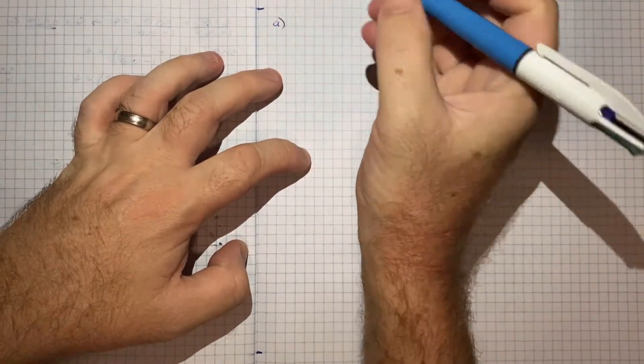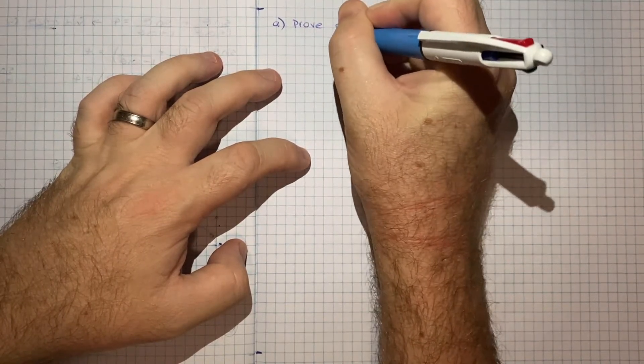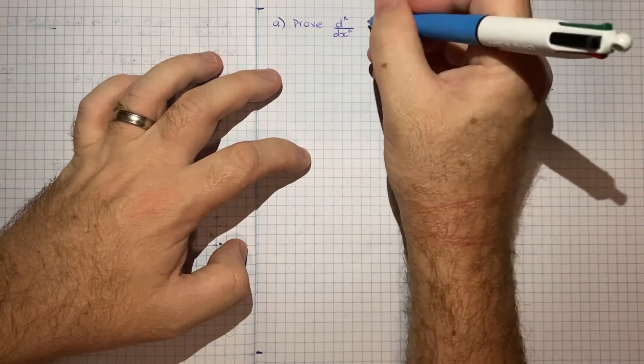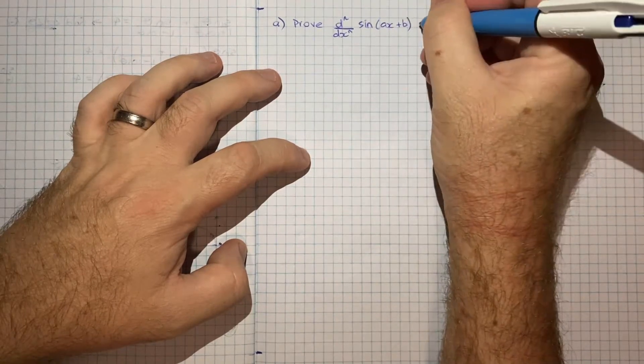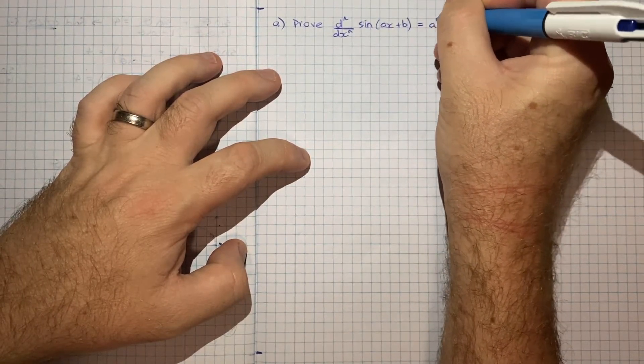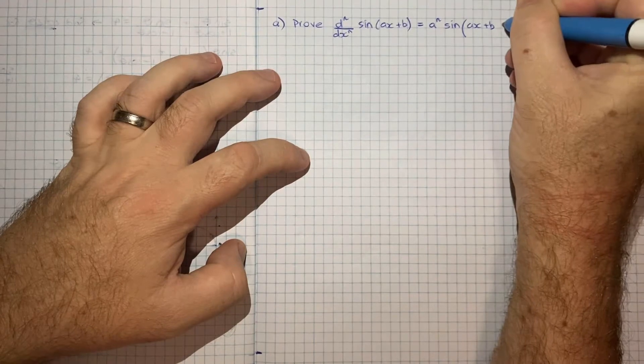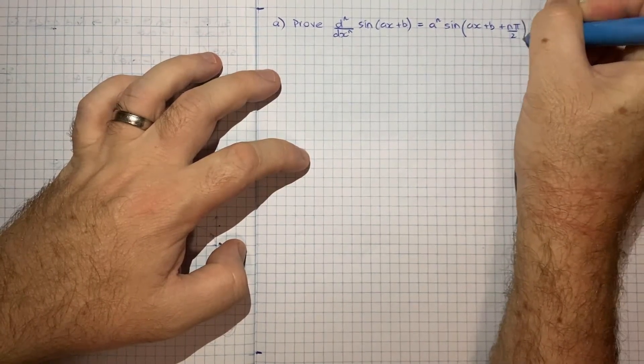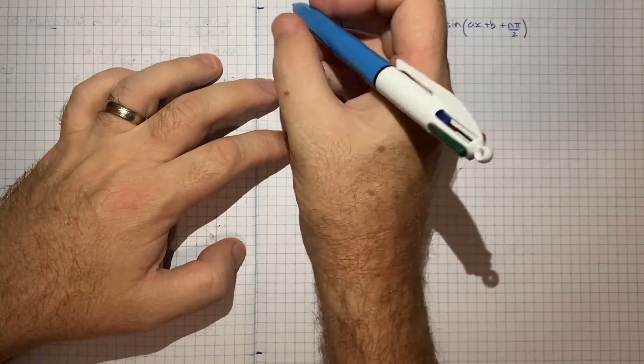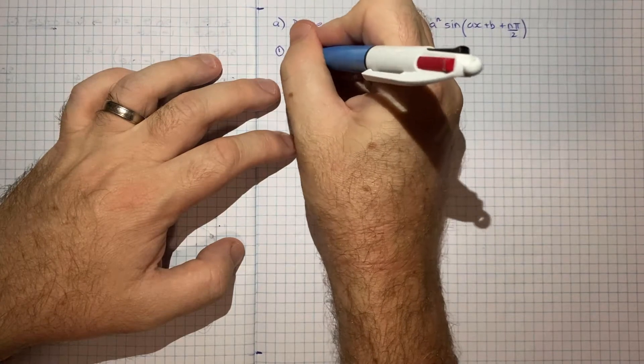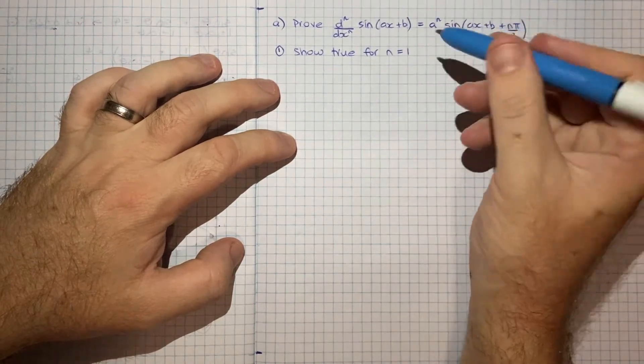So to start, I'll just write what we're trying to prove. So we want to prove that the nth derivative or d^n/dx^n of sin(ax+b), that nth derivative is a^n times sin(ax+b+nπ/2). And this is where n is a positive integer. So if we work through our steps of induction, step one will be to show that this is true for n is equal to 1.